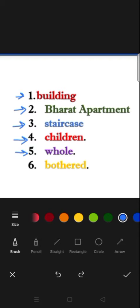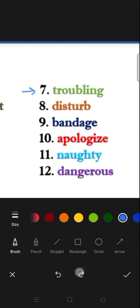The word Whole means complete. Sixth word is bothered, B-O-T-H-E-R-E-D. It means to irritate someone or to create problems for someone. Seventh word, Troubling, T-R-O-U-B-L-I-N-G. It means to irritate someone.